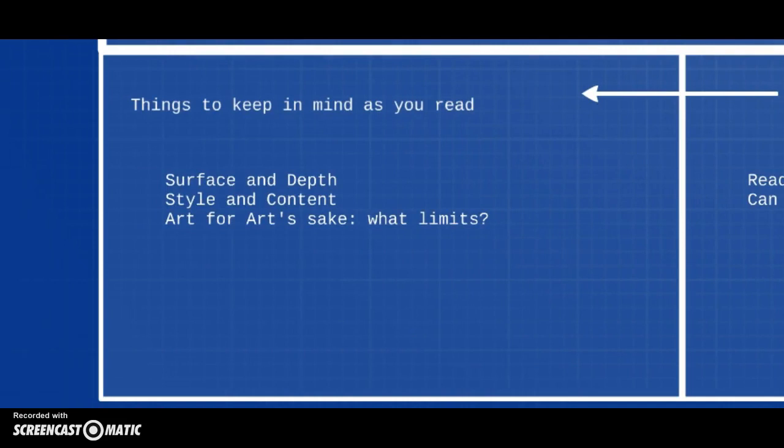Okay, so some things to keep in mind as you're reading. Surface and depth, right? Is there a possibility that this story has no depth to it, that it's just pure surface? And that might also connect with this question of style and content. We kind of talked about that with Kafka this week. And you'll have to see what you think, because Robbe-Grillet wants to say that style is content. Ultimately, the work of art is about how it's done, not what it does.